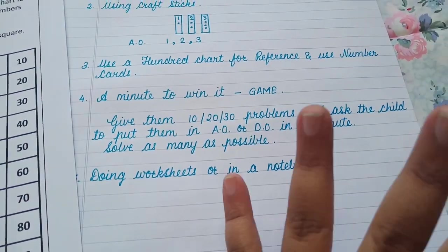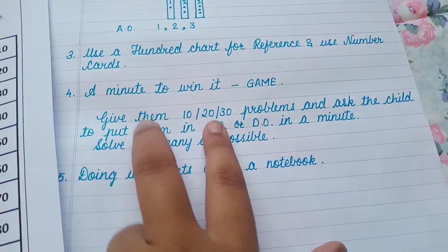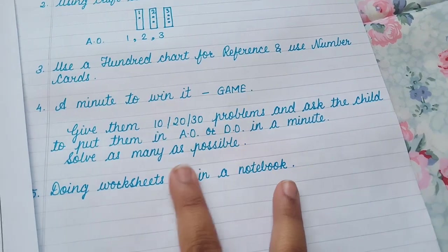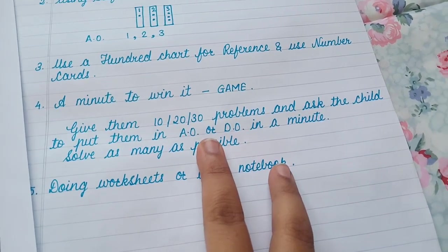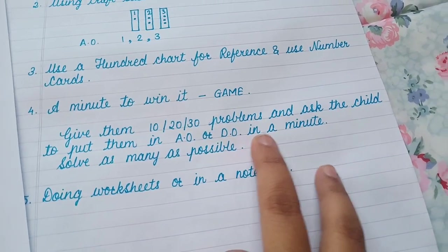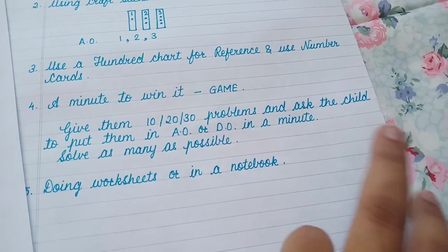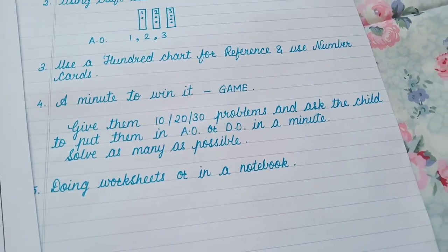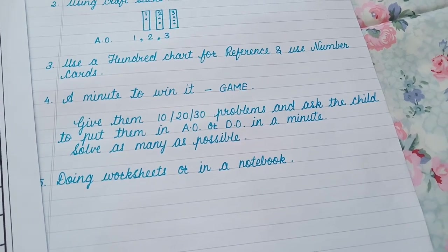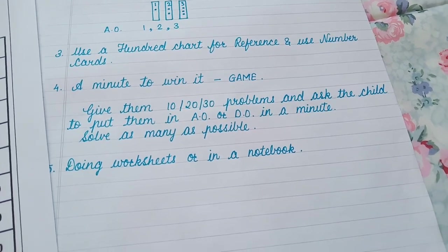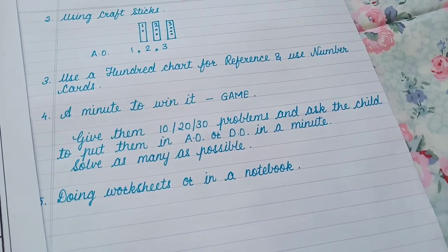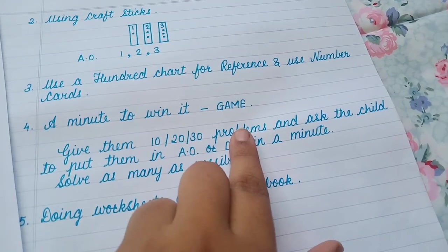Now the fourth fun activity or game you can do is a minute to win it. So give them 10, 20, 30 problems and ask the child to put them in the correct ascending order and descending order in a minute. So basically the child has to solve as many as possible in a single minute.